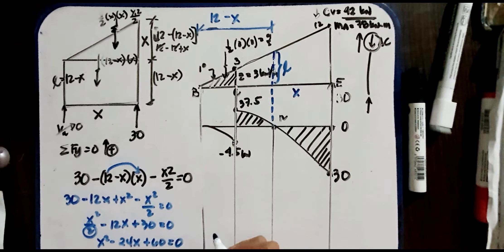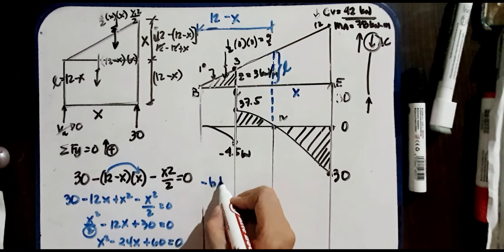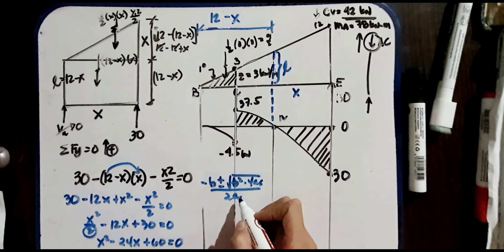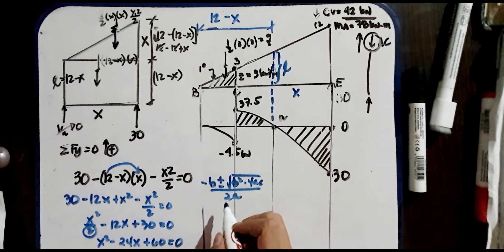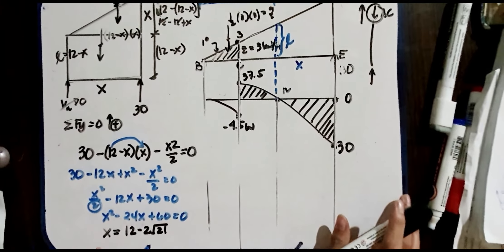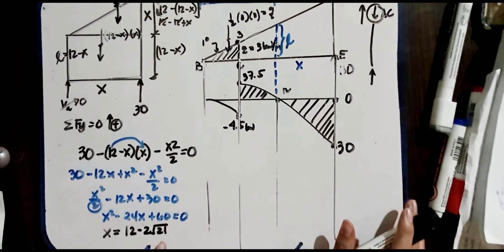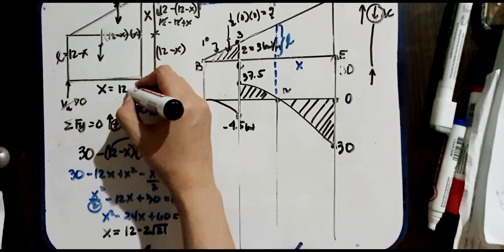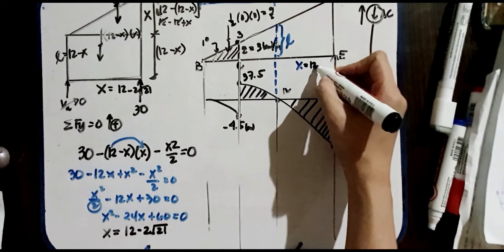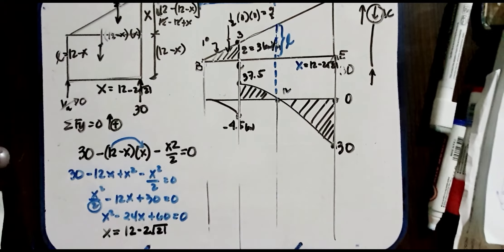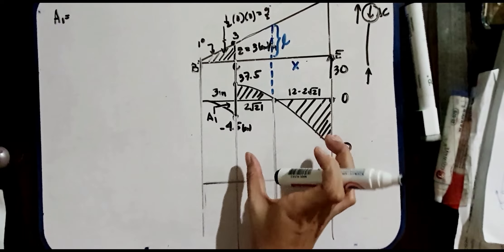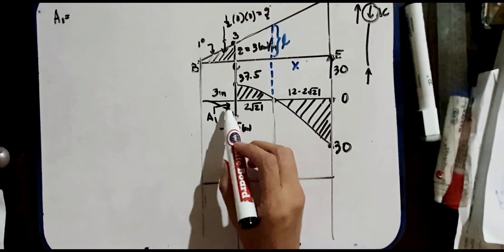By the quadratic formula, x = (−b ± √(b² − 4ac)) / 2a, giving x = 12 − 2√21, which is approximately 2.8348 meters. Substituting back: the remaining distance is 3 meters. The area under the curve for this portion is 1/3 × 3 × 4.5 = negative 4.5 kN.